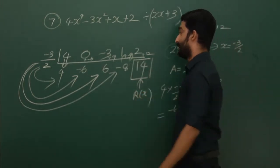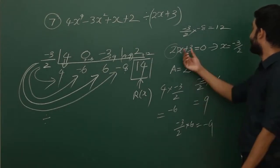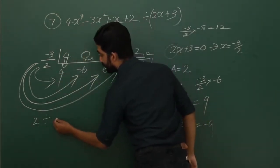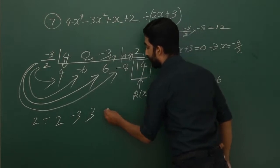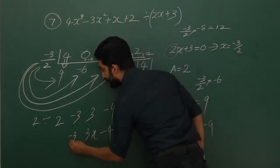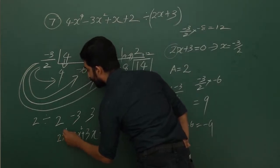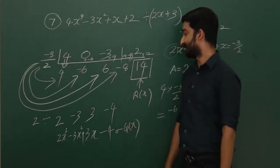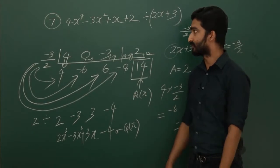Now divide the remaining digits 4, -6, 6, -8 by a which equals 2. You get 2, -3, 3, -4. In ascending degree order from right to left: -4 is the constant, 3x, -3x², and 2x³. So the quotient is 2x³ - 3x² + 3x - 4. You can compare this with the long division answer.